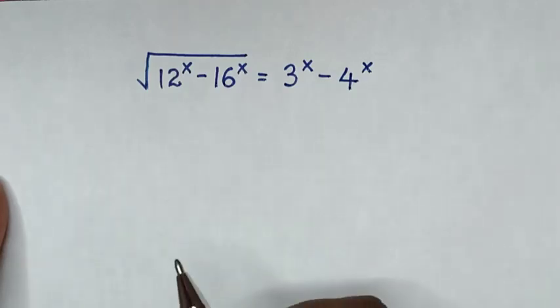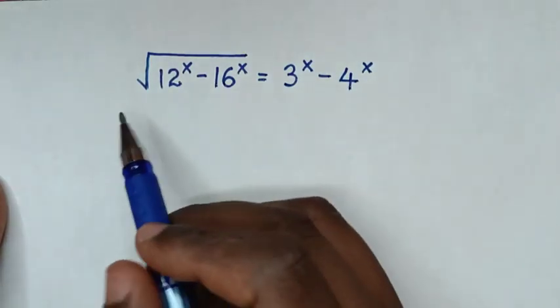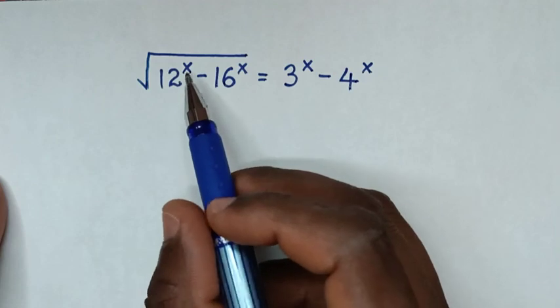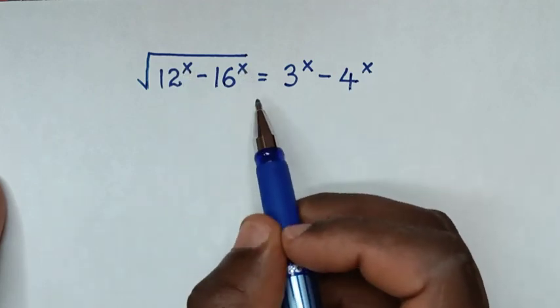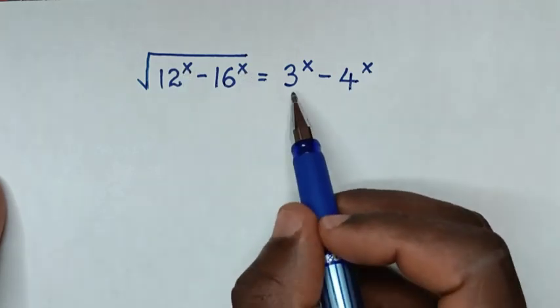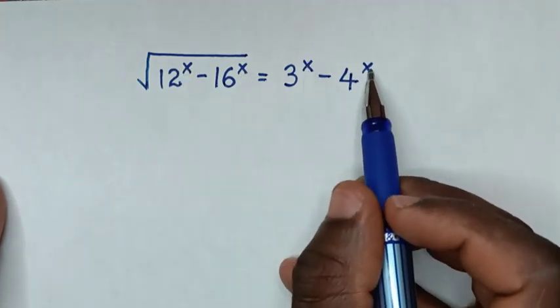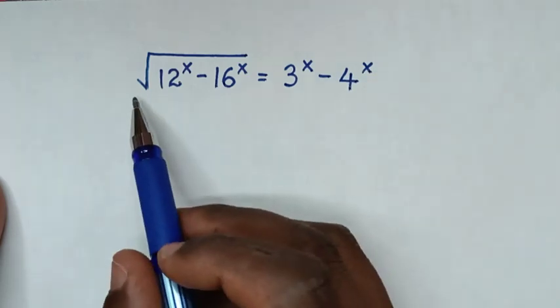Hello, you are welcome to solve this math problem which is: square root of (12^x minus 16^x) is equal to 3^x minus 4^x. We need to find the values of x from this equation.